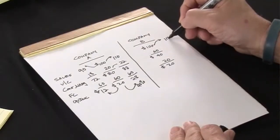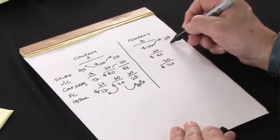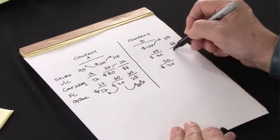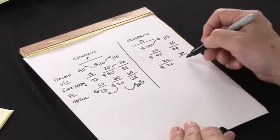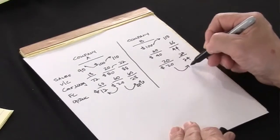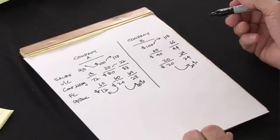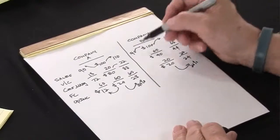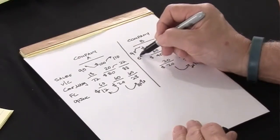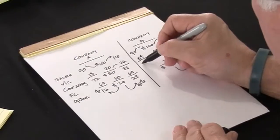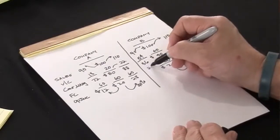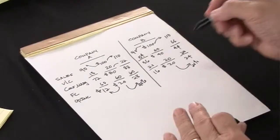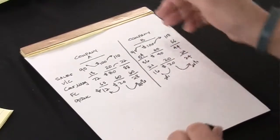Let's assume the same phenomenon occurs with Company B. Sales increase by 10% to $110, costs will go to $66, and profit will go to $44 — an increase of only 20%. A downtick of 10% in revenue will lower variable cost to $54, contribution margin will be reduced to $36, and overall profit will drop to $16, which is a 20% reduction.